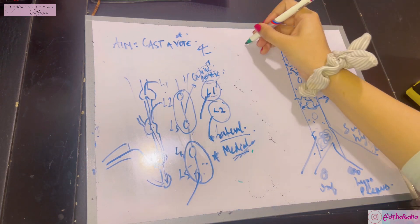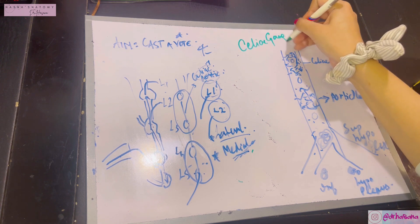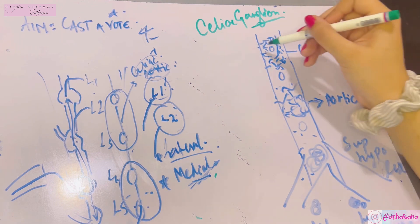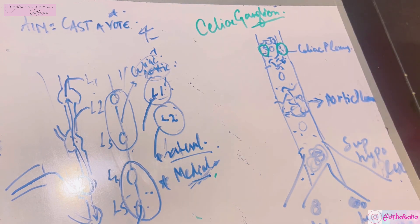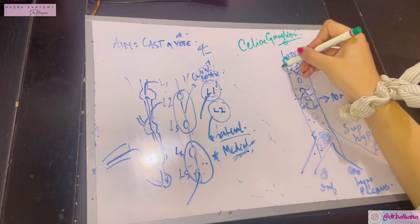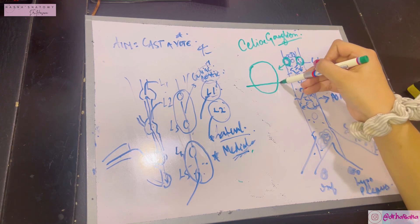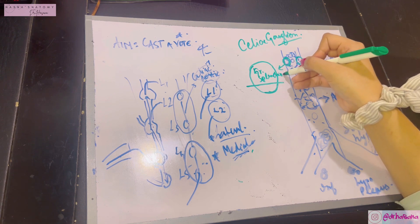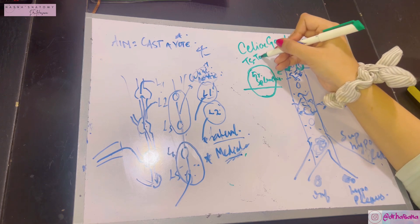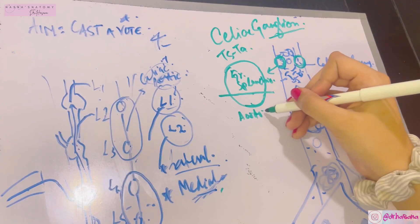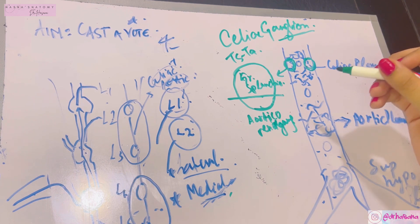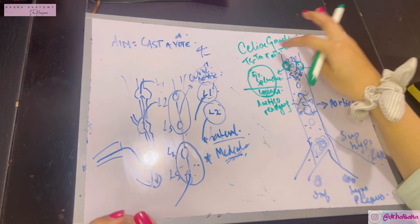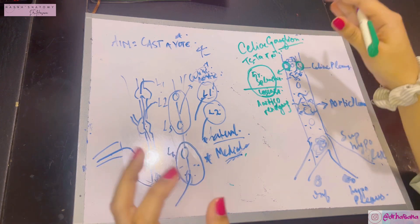The celiac ganglion is the largest ganglion of the body — it is the intermediate ganglion where most splanchnic nerves relay or synapse. It lies on either side of the celiac trunk. Importantly, for examination: it is divided into an upper larger part and a smaller lower part. The upper greater part receives the greater splanchnic nerve, which brings sympathetic fibers from segments T5 to T9. The smaller lower part is known as the aorticorenal ganglion, which receives fibers from the lesser splanchnic nerve from T10 and T11.